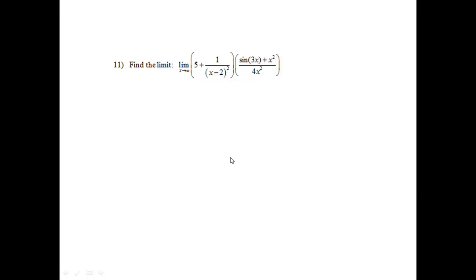We're going to be using our property rules, which tell us that since this is multiplication, we can work each problem separately and then multiply our limits together.